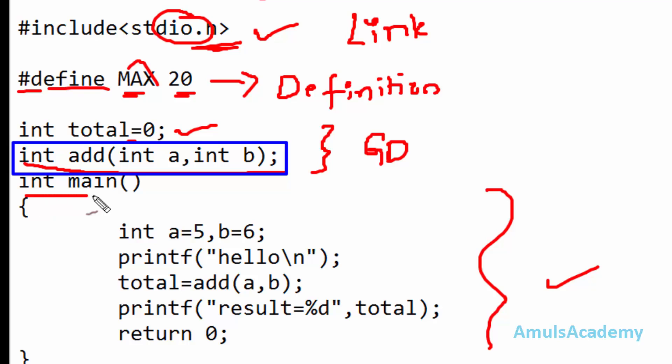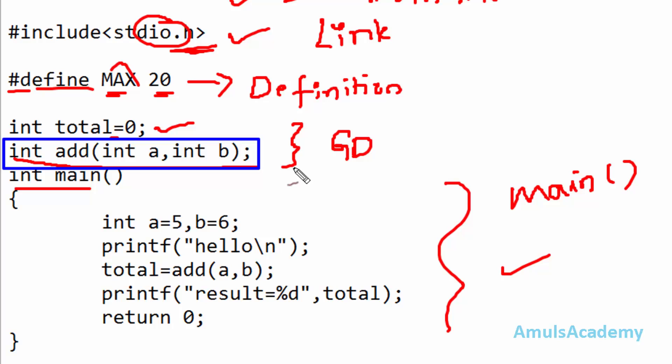Next we can see int main() - this is the main section. As I said, every C program contains this main section. In the main section, there are two parts: one is the declaration part, and the other is the execution part.